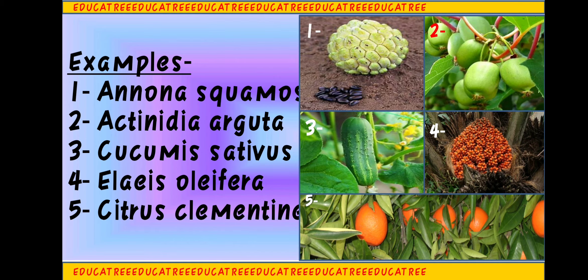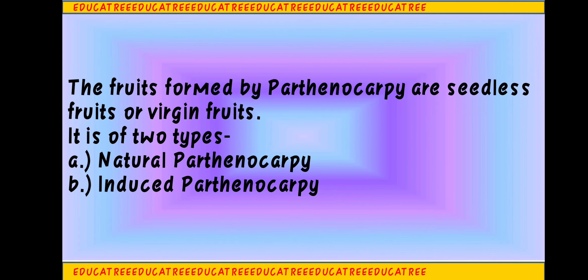The first example I told you about is Annona squamosa — you can see it in Figure 1, a fruit you all must have eaten. Similarly the second example is Actinidia arguta, third is Cucumis sativus, fourth is Alcea oleifera, and the last is Citrus clementinae. All of these are examples of Parthenocarpic fruits, which are also called virgin fruits. There are two types: Natural Parthenocarpy and Induced Parthenocarpy.